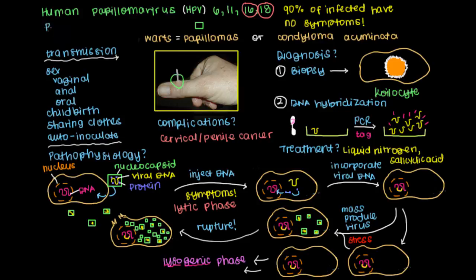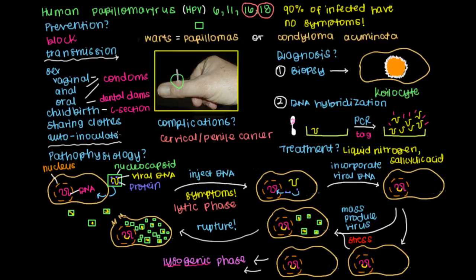What about if we want to catch HPV early? How do we prevent it? The mainstay of preventing any sexually transmitted infection is to block transmission. In the case of sex, that means decreasing direct contact, which for vaginal, anal, and oral sex means the use of condoms. With oral sex, that can also be achieved through dental dams. If a pregnant woman has HPV, you can deliver the baby through C-section to limit contact with active warts.